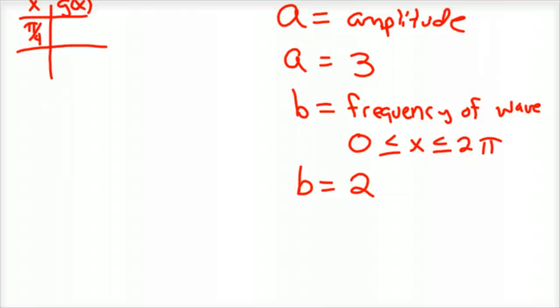So frequency, B tells you the frequency of the wave from 0 to 2 pi. So our frequency is 2. So we get 2 full cycles in a full circle. A full circle is 2 pi.